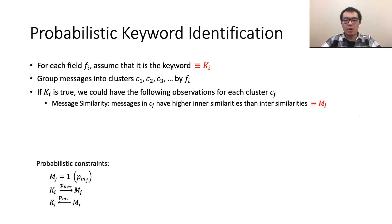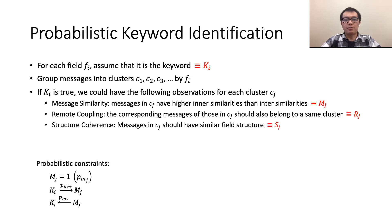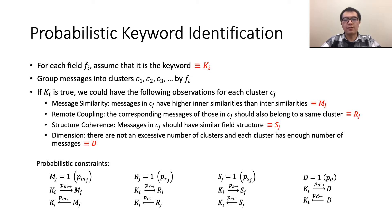Besides message similarity, we also consider some other observations. For example, remote coupling, which means for a cluster from one side, the corresponding messages from the other side should also belong to the same cluster as we discussed in the insights. Structure coherence constraints state that the messages of the same type share similar field structure. We also consider the dimension of the clustering results, which is a global observation and not specific to a cluster. Similarly, we can define the observation constraints and the implication constraints.